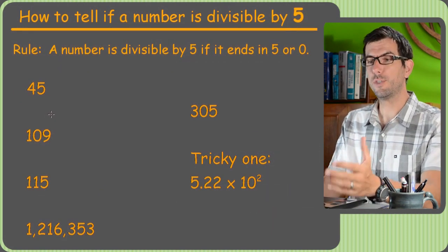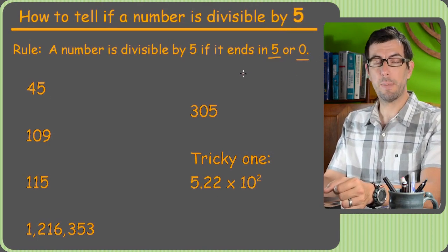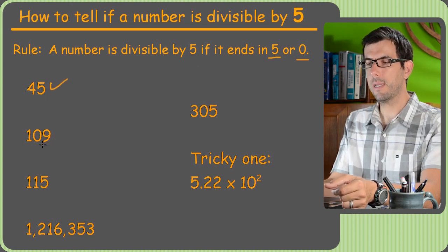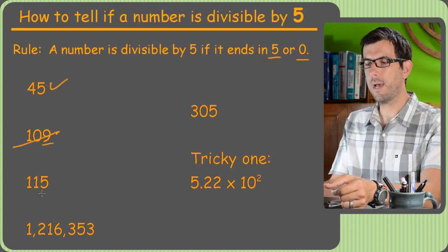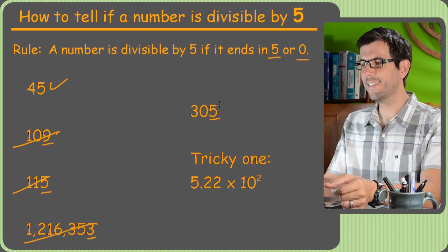How to tell if a number is divisible by 5. This one's super easy. If it ends in a 5 or 0, it is divisible by 5. And if it's not, it's not. So 5, yes. 9, no. 5, yes. 3, no. 5, yes.